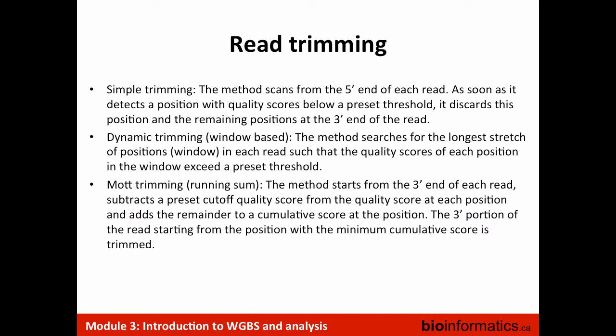If you identify that there are some reads that are problematic or of lower quality, there are different trimming strategies you can use: simple trimming where you scan from the 5' or 3' end and as soon as the quality falls below a particular threshold you trim the read, or some slightly more advanced trimming strategies. If you have reasonable quality data, it's not going to make a huge difference which specific trimming strategy you use. But if you have lower quality data, that's worth exploring in more detail.